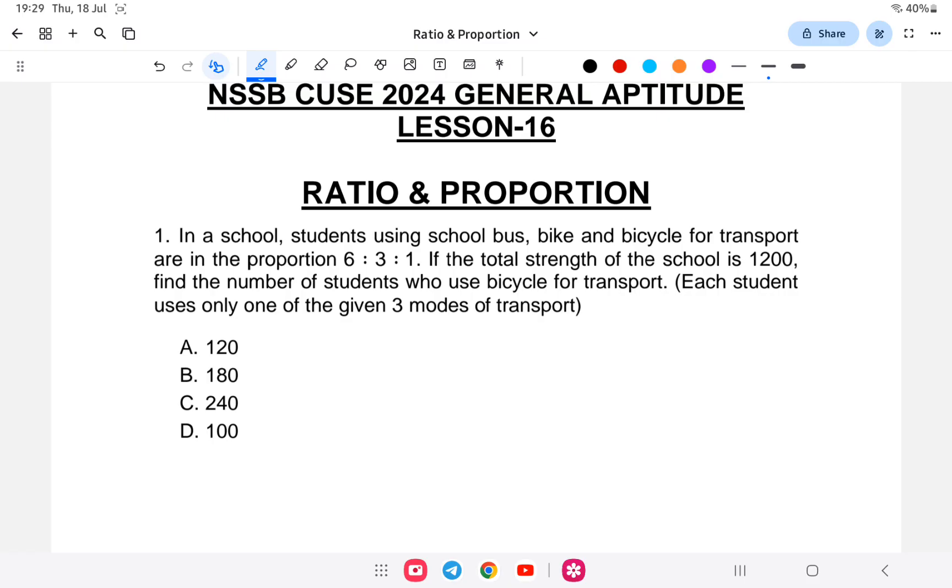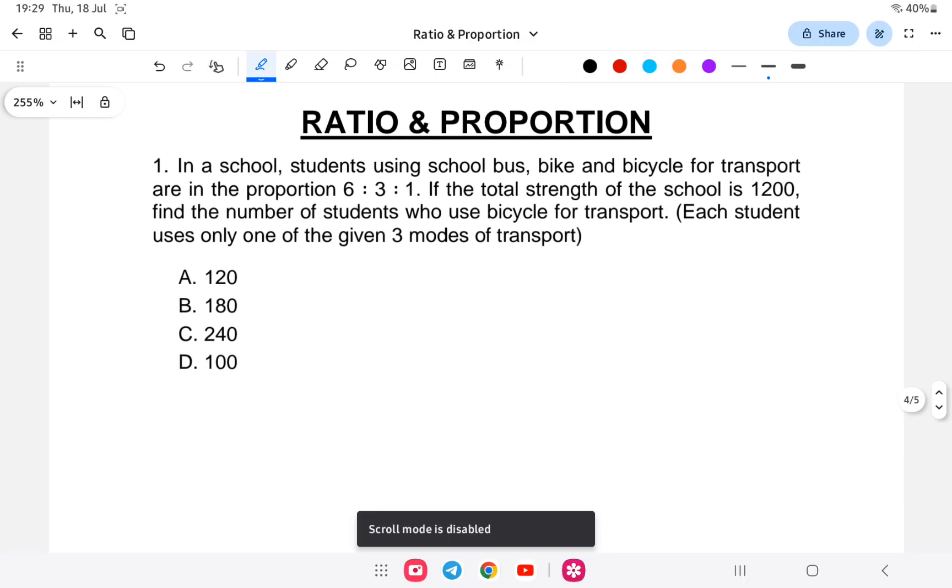Let us start with Ratio and Proportion, lesson number 16 of general aptitude. First question: In a school, the students are using school bus, bike, and bicycle for transport in the proportion 6:3:1. If the total strength of the school is 1200, find the number of students who use bicycle for transport.